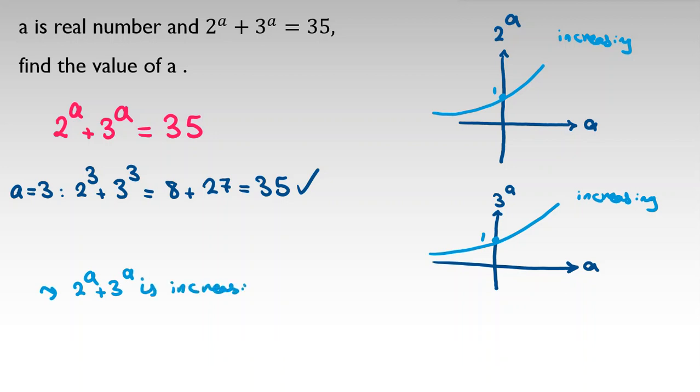If we consider this increasing function, after a=3 it will be greater than 35. So 2^a + 3^a will be a function like this, and because we want to reach 35 on the right-hand side, we can mark 35.